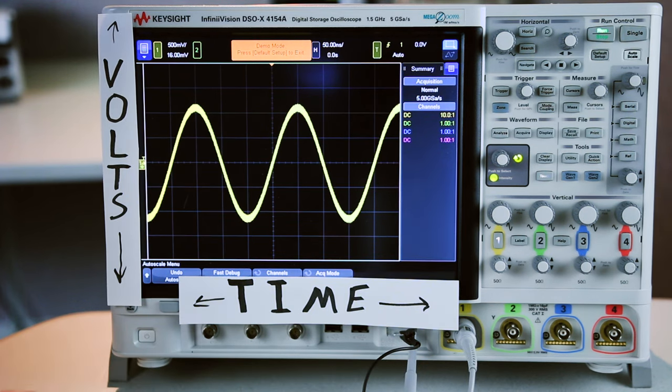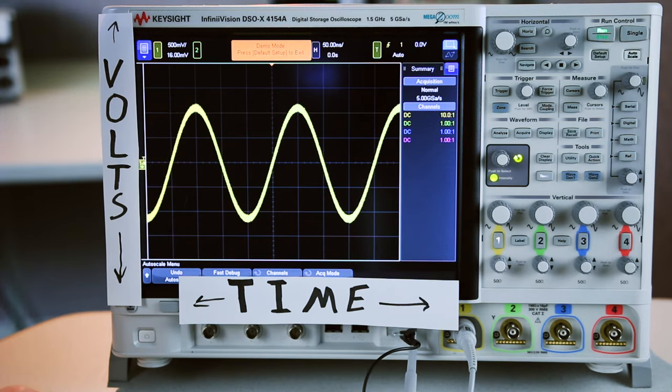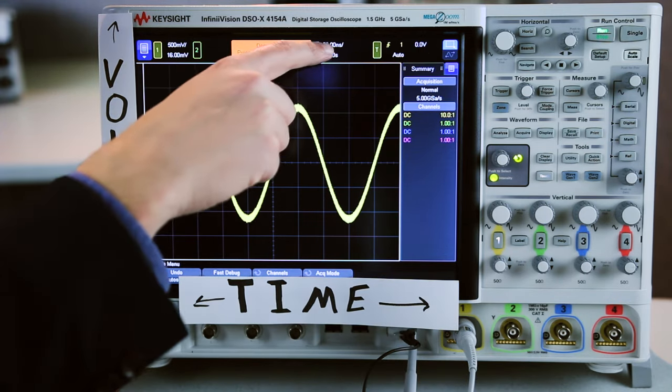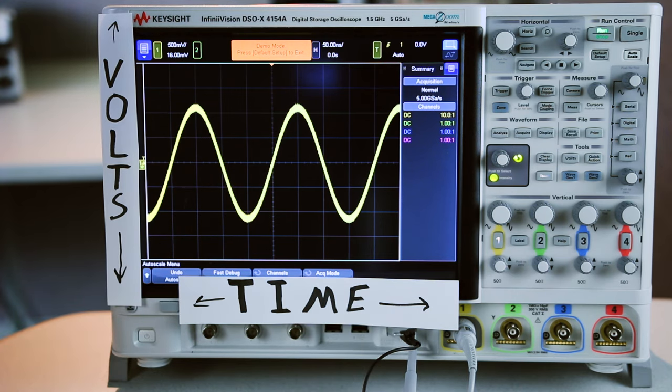You'll also notice that I have grid lines vertically and horizontally on the screen. The values up at the top tell me the magnitude of each of those grid lines. So this says 50 nanoseconds horizontally, which means each one of these horizontal grid lines represents 50 nanoseconds in time.